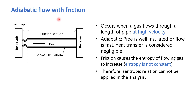In adiabatic flow, by definition there is no heat going in or out of the system. This occurs when gas flows at very high velocity through a well-insulated pipe, so heat transfer from inside to outside is negligible. However, friction increases the entropy of the gas as it flows from one point to another, which means we cannot apply the isentropic equations here.